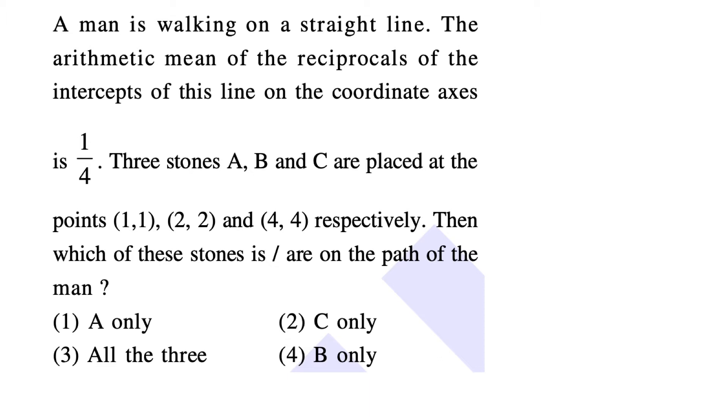A man is walking on a straight line. The arithmetic mean of the reciprocals of the intercepts of this line on the coordinate axis is 1 by 4. Three stones A, B, C are placed at the points (1,1), (2,2), and (4,4) respectively.